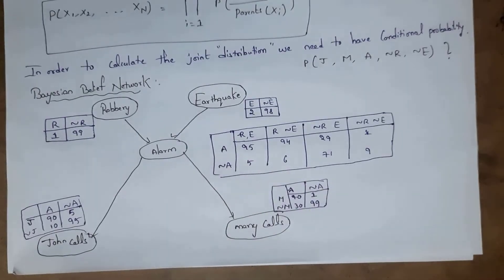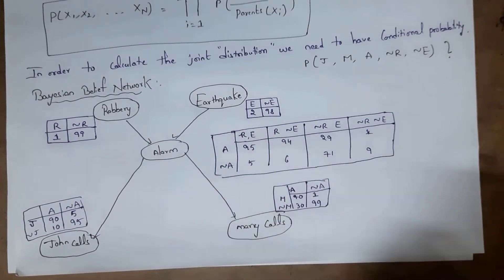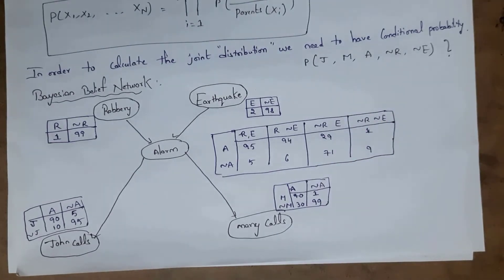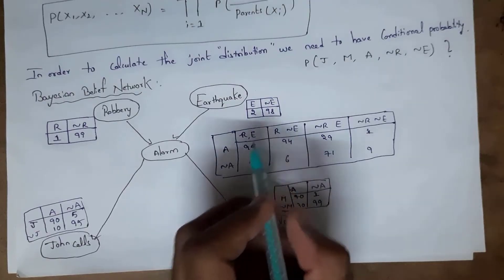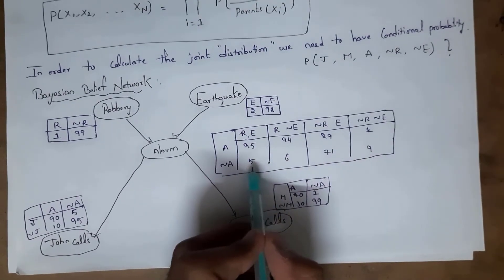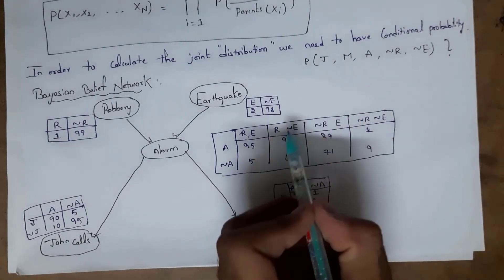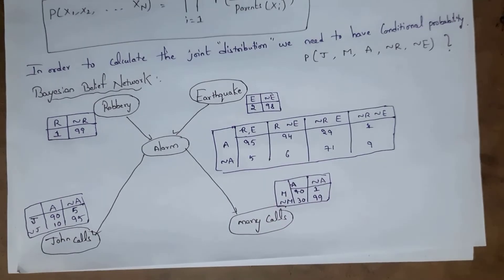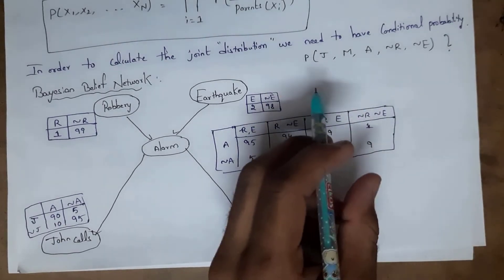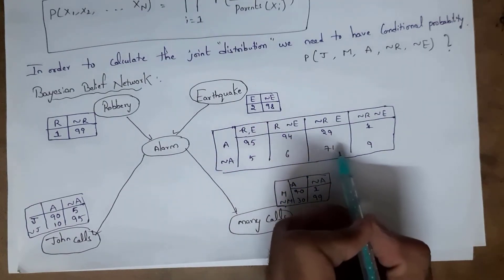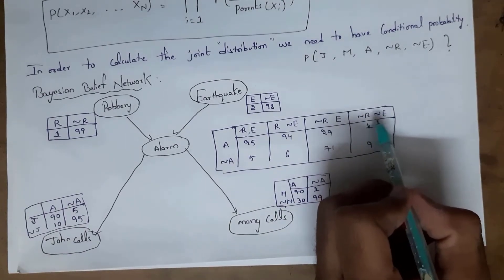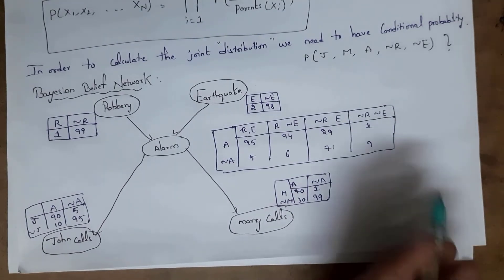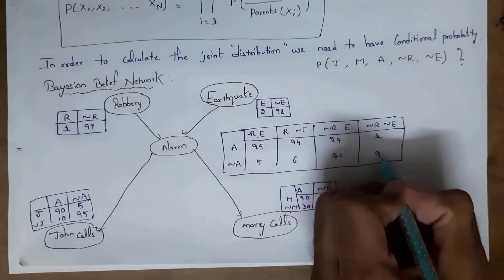When both robbery and earthquake occur, there is a 95% chance the alarm will ring and 5% it will not. When robbery occurs but not earthquake, there is a 94% chance the alarm rings and 6% it will not. When earthquake occurs but not robbery, there is a 29% chance the alarm rings and 71% it will not. When neither robbery nor earthquake occurs, there is only a 1% chance the alarm rings and 99% it will not.